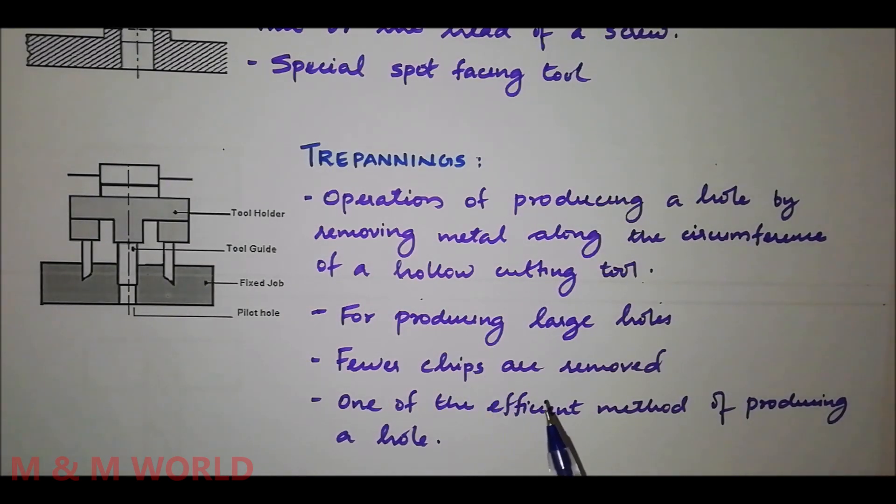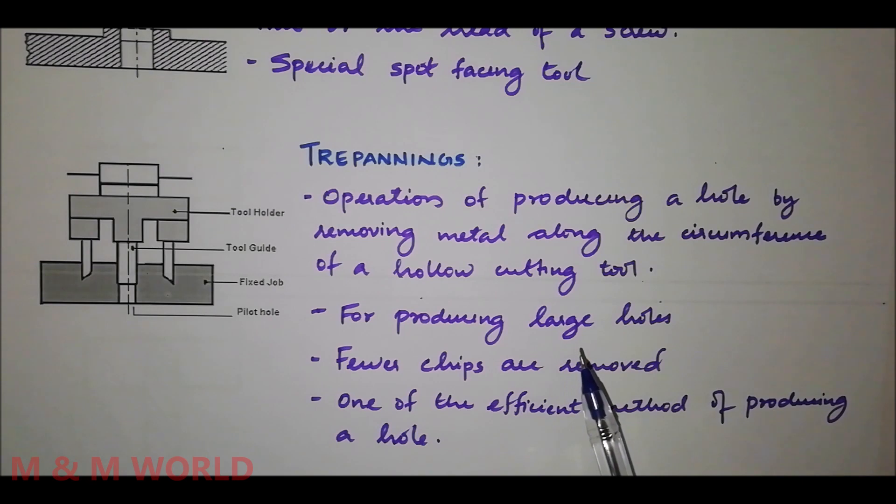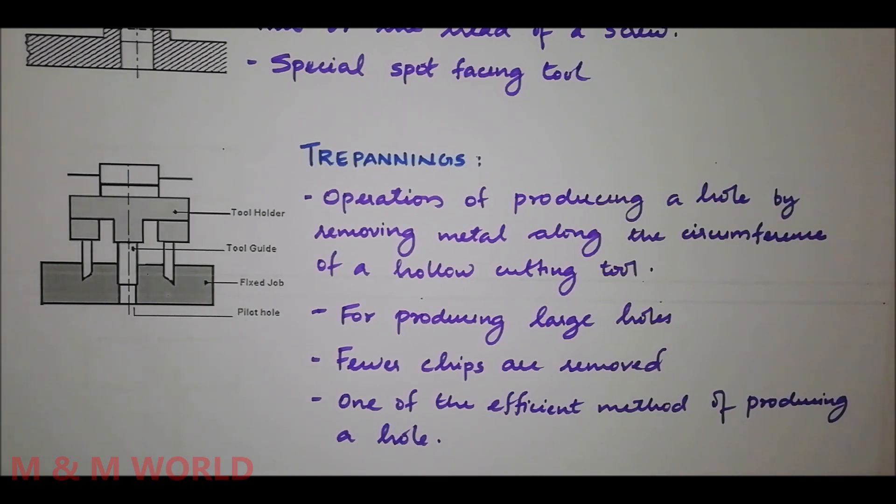Trepanning operation is performed for producing large holes. Fewer chips are removed and much of the material is saved while the hole is being produced. The tool is operated at higher speed and this is one of the efficient methods of producing a hole.